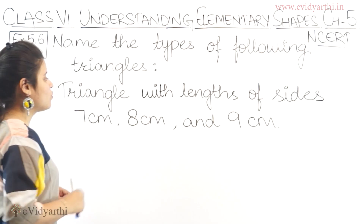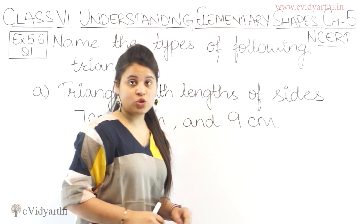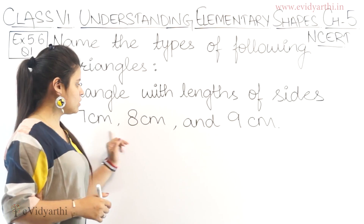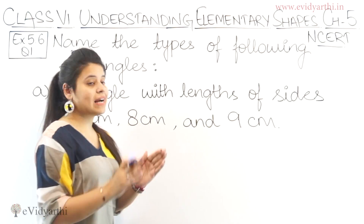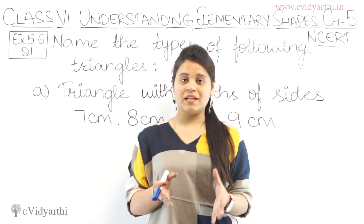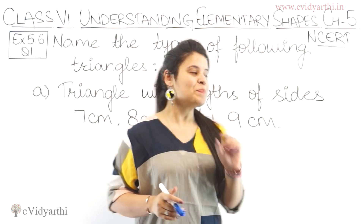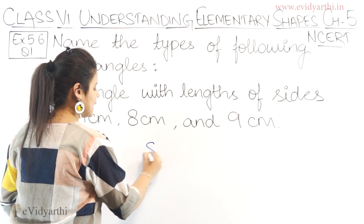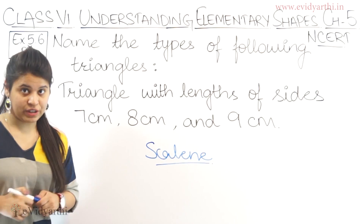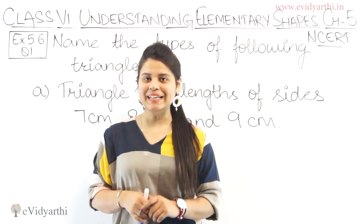The first one is a triangle with lengths of sides 7 cm, 8 cm and 9 cm. Here we have 3 sides given: 7, 8 and 9 cm — all three sides are different. I would ask you to go and check out the introduction so that you can understand the basic concept. This is a scalene triangle because all sides are different.